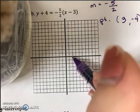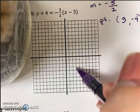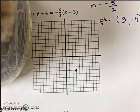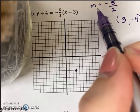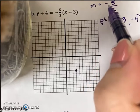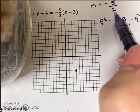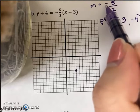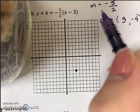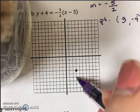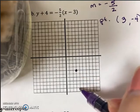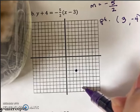I'm going to plot my point 3, negative 4. So 1, 2, 3. 1, 2, 3, 4 right here. There's my first point. All you need is a second point. To get that point, you're going to use your slope. The slope is negative 5/2. I'm going to move down 5 and right 2 units. So 1, 2, 3, 4, 5. 1, 2. There's my second point.